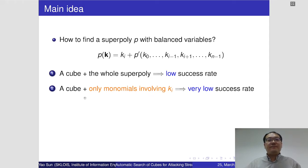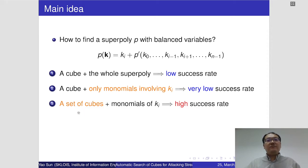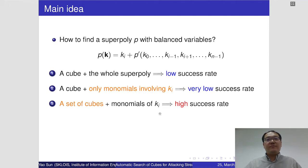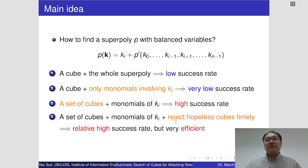We got a third idea: we can treat a set of cubes together such that the common computations among these cubes can be shared. This method is much faster than the previous ones and also has a high success rate. But in fact, this method is still not efficient enough because we must finish the computation of all the cubes, and we only need a few valuable cubes. So we think we can reject some hopeless cubes during the computation. This will slightly lower the success rate, but the efficiency will be very good.